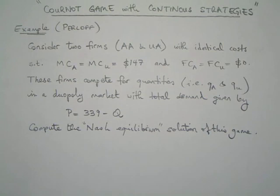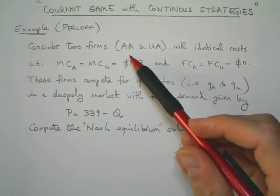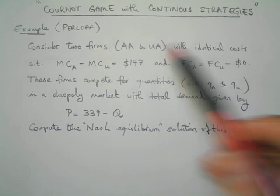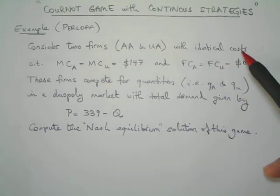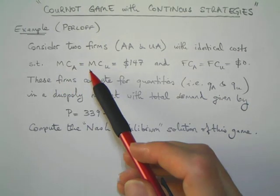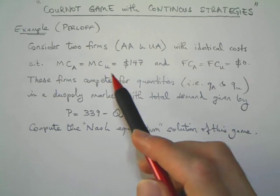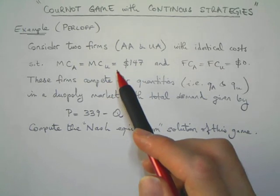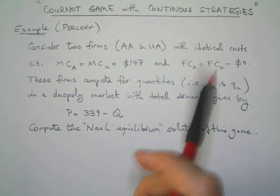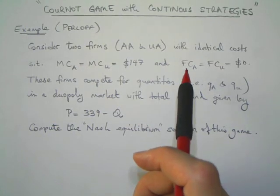Let's read the example first. We have two firms, American Airlines and United Airlines, with identical cost functions. These two firms are identical in every respect. They have the same marginal costs of 147 dollars, meaning that each passenger costs the company this much.